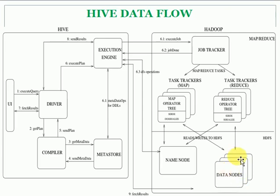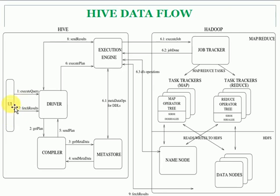The responses are sent back to the execution engine — this is step 6.3, the DFS operations. Data is sent to the execution engine, then results are sent back to the driver, and the driver shows the results in the GUI. This is the complete step-by-step process: whether you're running queries in Ambari View, HUE, or any client accessing through JDBC or ODBC driver, the query first goes to the driver since the driver doesn't understand what you're executing, so it sends to the compiler to prepare an execution plan.